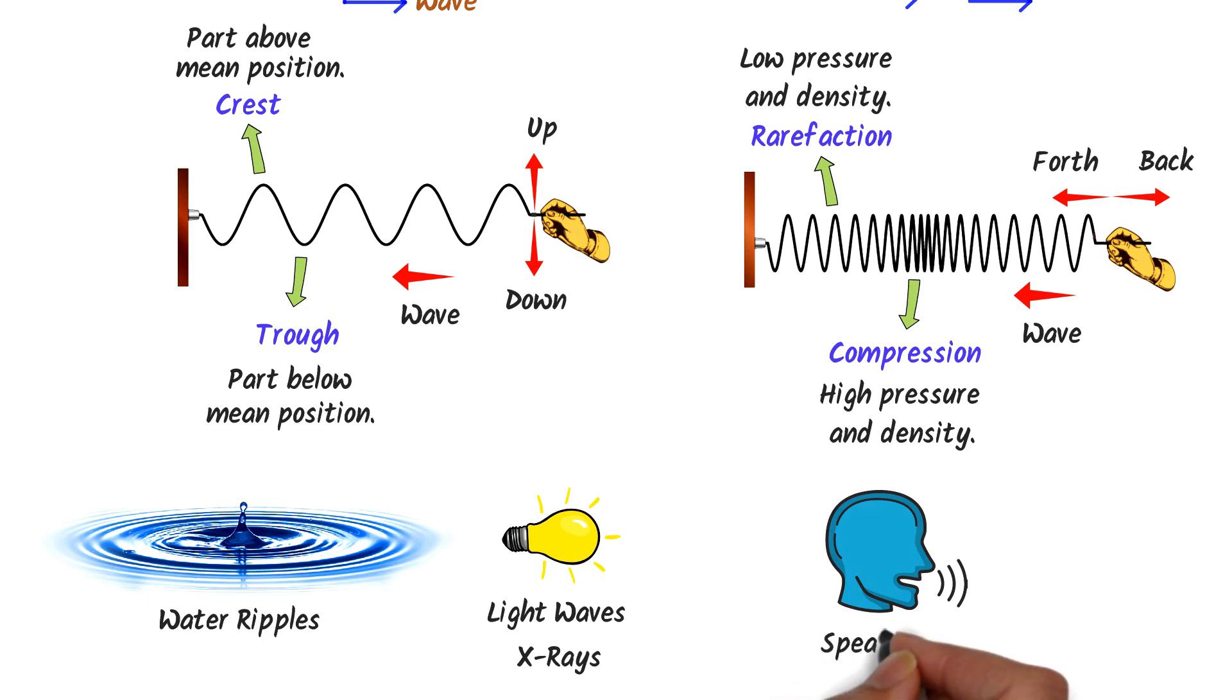For example, when we talk in our daily life, we produce sound waves. These sound waves are examples of longitudinal waves. Thus, remember this main difference between transverse waves and longitudinal waves.